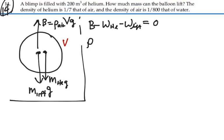So we have the density of air times the volume of the balloon times g which is our buoyant force minus the weight of the helium which will be the mass of the helium times g minus the mass of the lift times g equals zero. Divide both sides by g.